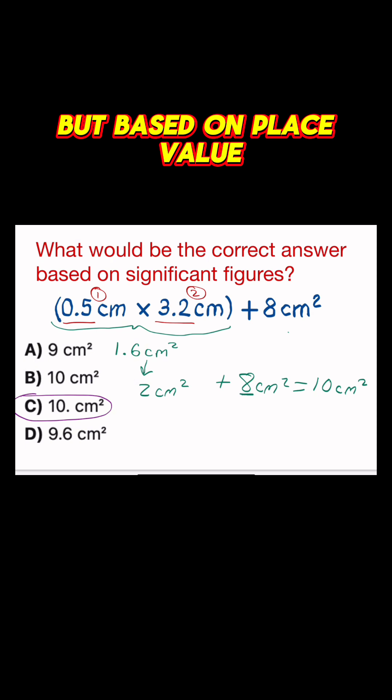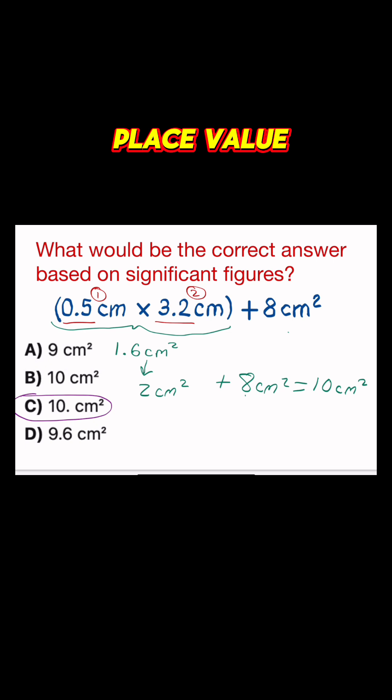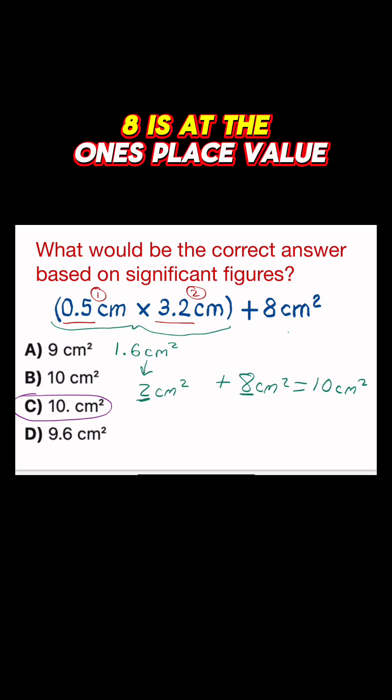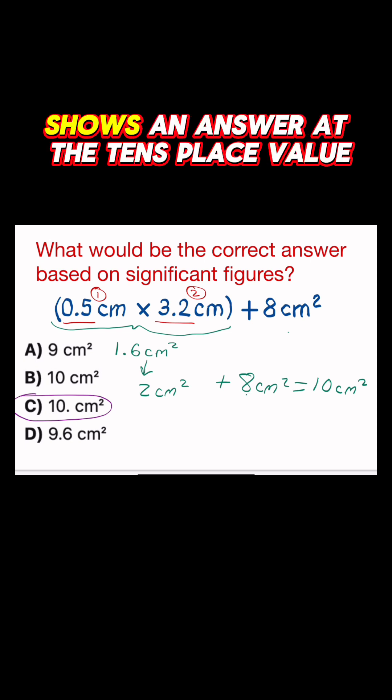But based on place value, because of addition, 2 centimeters squared is at the 1's place value. 8 centimeters squared is at the 1's place value. Leaving your answer without the decimal shows an answer at the 10's place value.